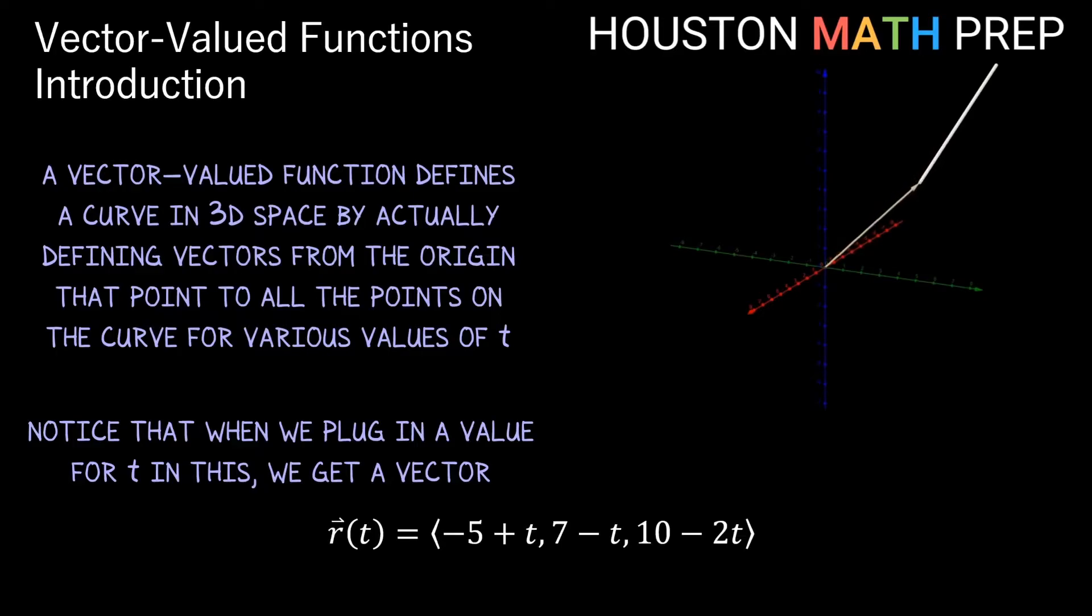And you can see that the pattern of locations that this vector-valued function points to makes up a line. If we specified some interval for t, we'd only get part of the curve, in this case a line segment, but if we let t take on any possible value, then we'll get the entire path through 3D space.